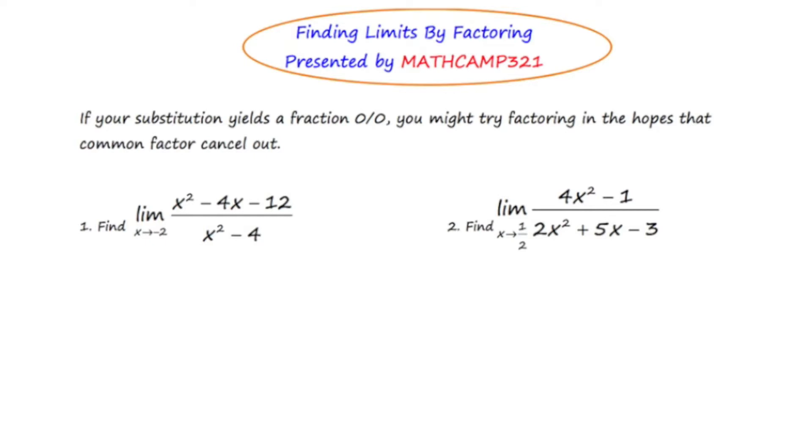In this method, we have just learned that one option we have in evaluating a limit is something called direct substitution. But I addressed in that video that if when you substitute, you end up getting the fraction 0 over 0, it means you have to try something else. You can't write down as your answer 0 over 0. So if your substitution yields the fraction 0 over 0, you might want to try factoring in the hopes that common factors cancel out.